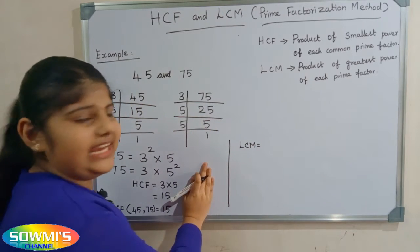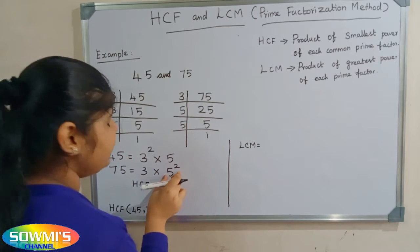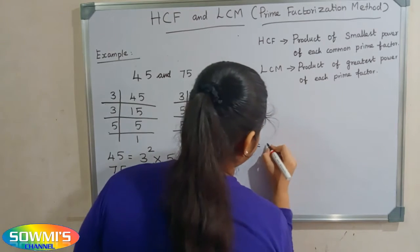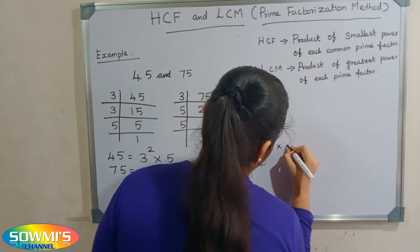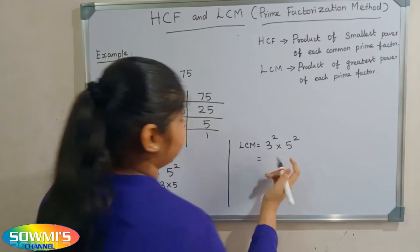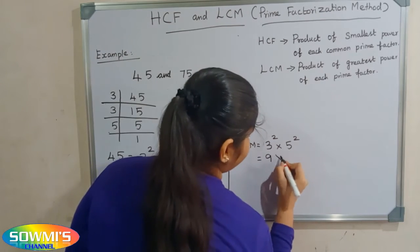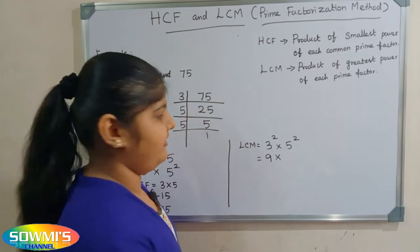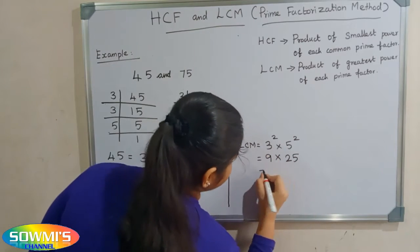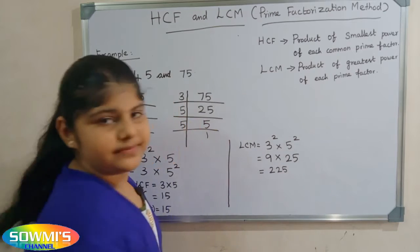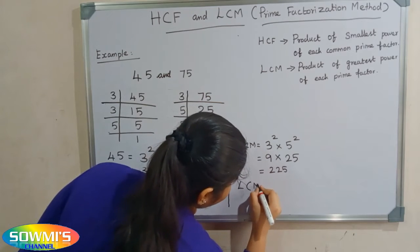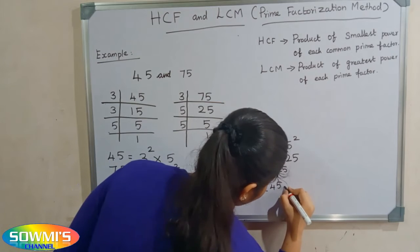The greatest power of each prime factor is 3 squared and 5 squared. So now we have to multiply 3 squared and 5 squared. LCM is 3 squared multiplied by 5 squared. 3 squared is 3 × 3 which is 9. 5 squared is 5 × 5 which is 25. So 9 multiplied by 25 is 225. Therefore, the LCM of 45 and 75 is 225.